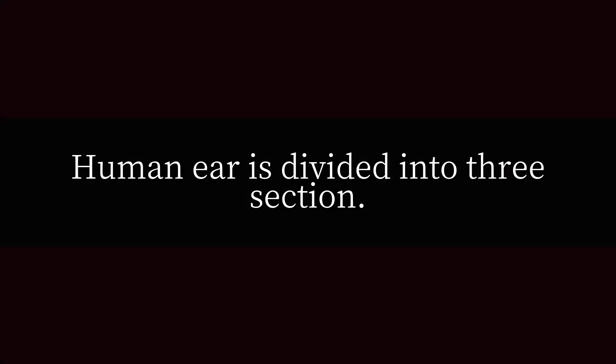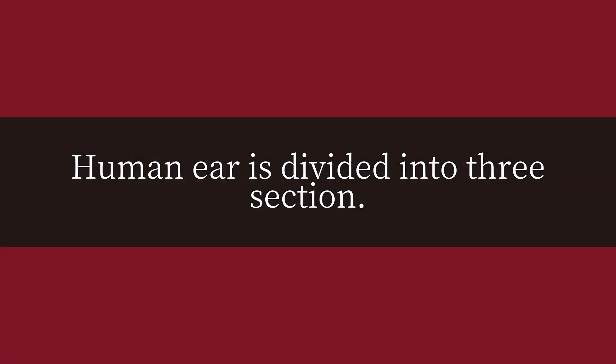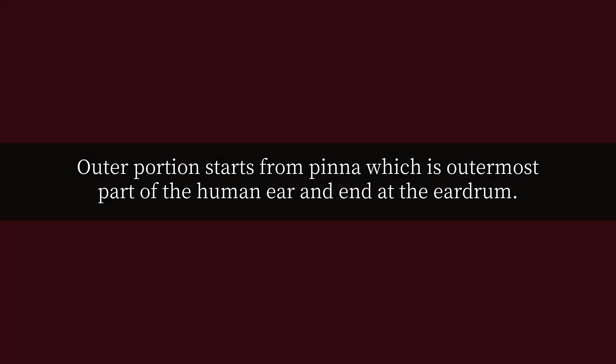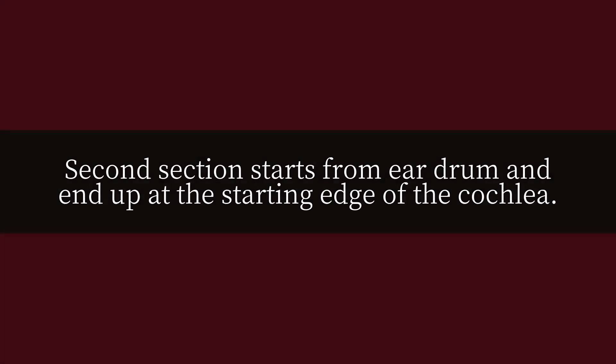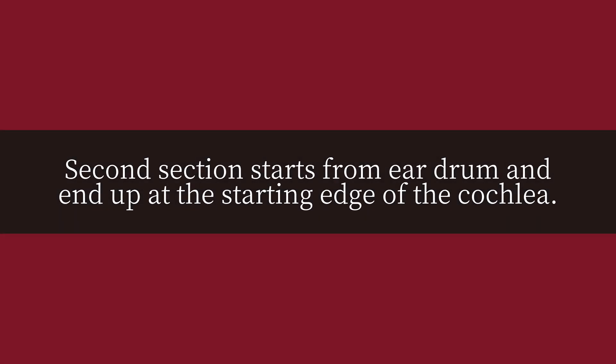How many bones are there in ears? The human ear is divided into three sections. The outer portion starts from the pinna, which is the outermost part of the human ear, and ends at the eardrum. The second section starts from the eardrum and ends at the starting edge of the cochlea.